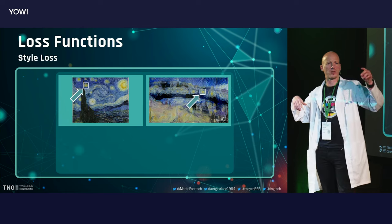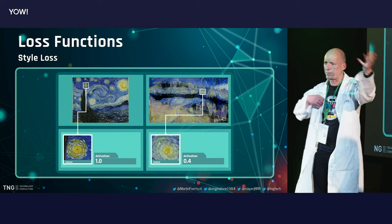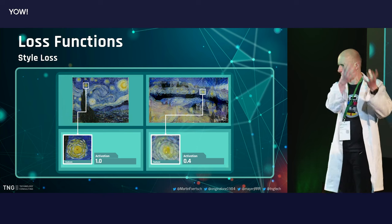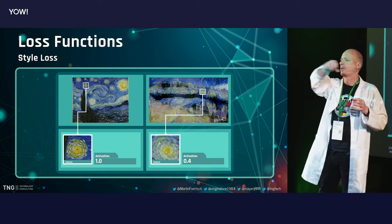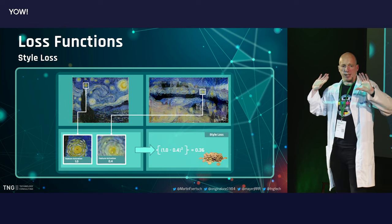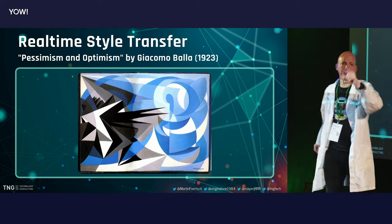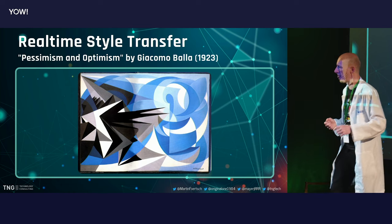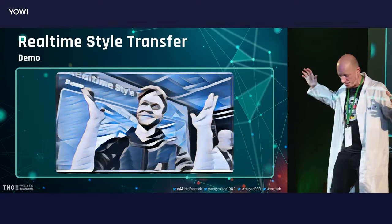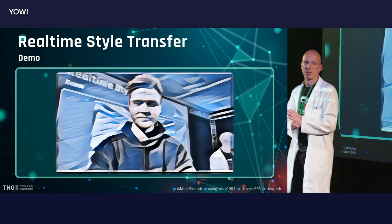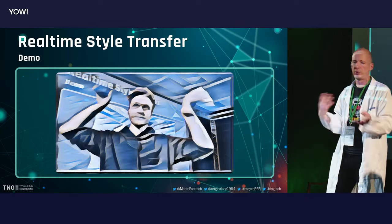Now let's have a demo. This is a picture by Giacomo Balla called 'Pessimism and Optimism.' Jonas is now starting the live demo with real-time style transfer. A deep neural network is taking the video stream and restyling all the incoming frames in real time. Isn't that amazing? Of course, we don't only have this style — let's switch through them.